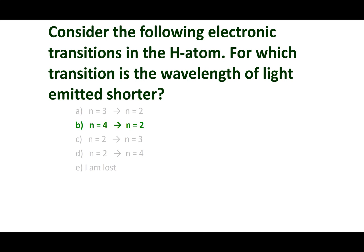One final point: the sign of energy. For emission, light is coming out of the atom. If we consider the atom the system, energy is leaving, so delta E is negative. For absorption, light is coming into the atom, so delta E is positive. We always take the point of view of the system — energy out is a negative sign, energy in is a positive sign.